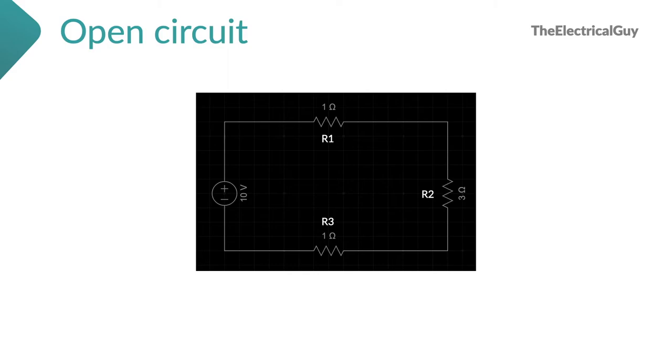Consider a series circuit shown. Let's say R3 is damaged which caused an open circuit. First thing we notice here, current in the whole circuit will become zero. Voltage drop across R1 and R2 will also be zero. However, voltage drop across the open will be equal to the supply voltage.